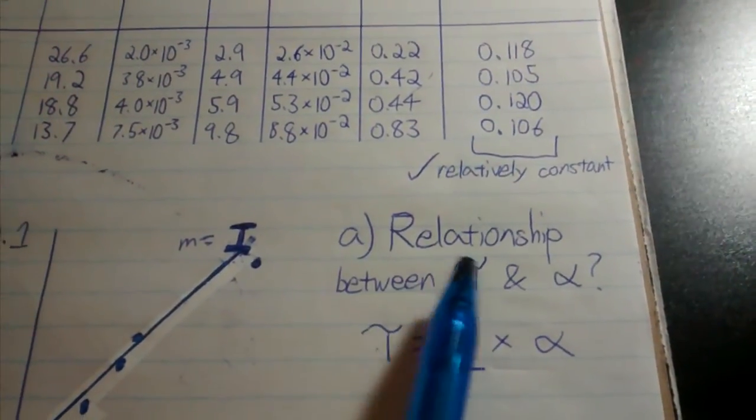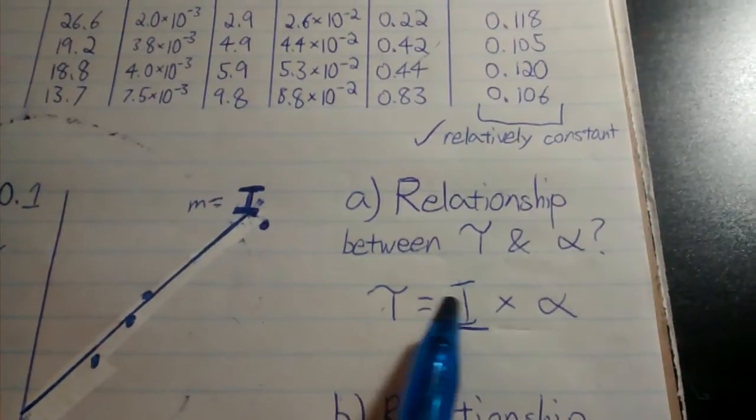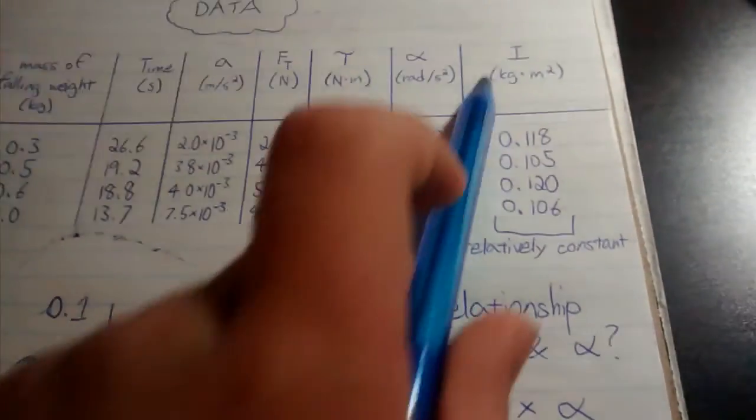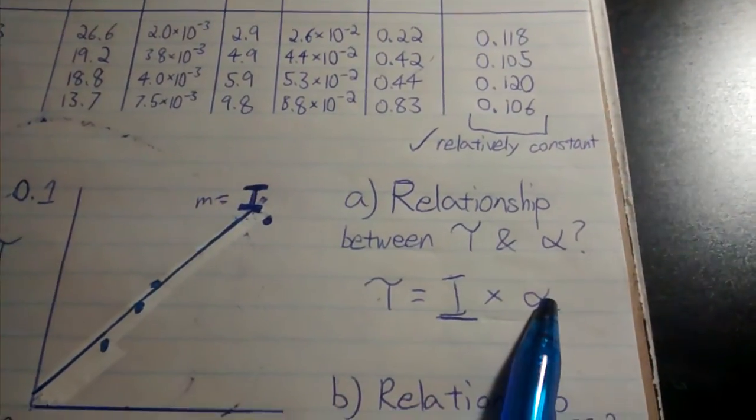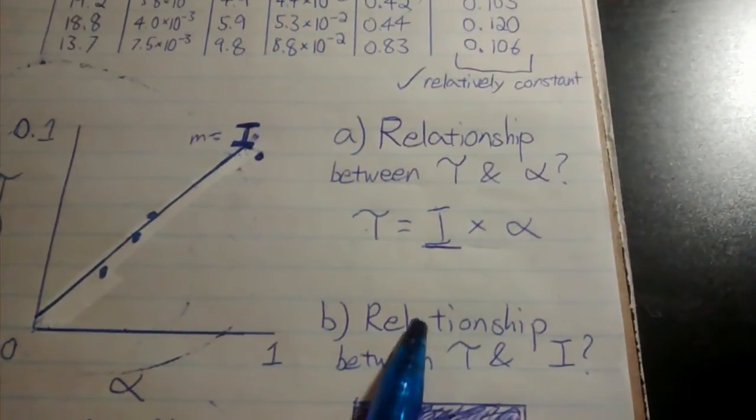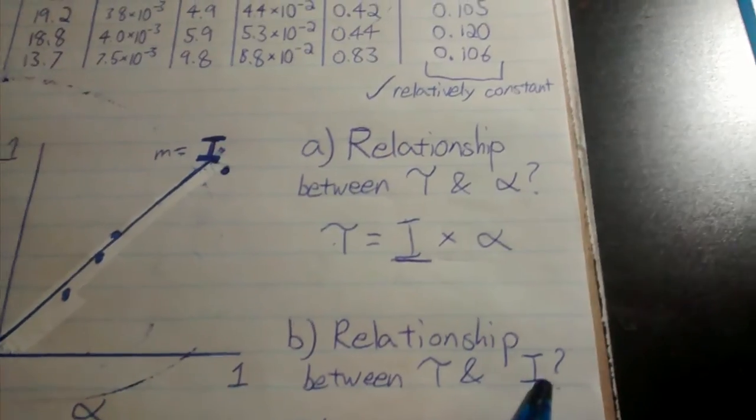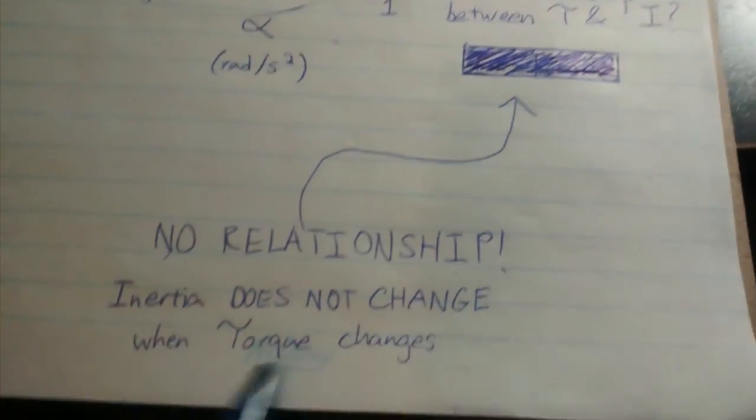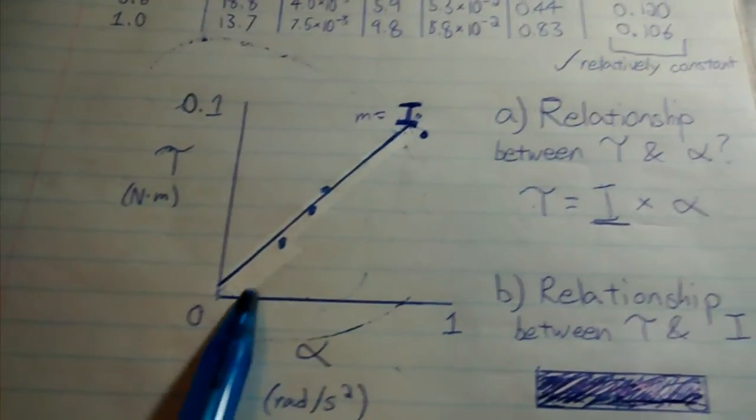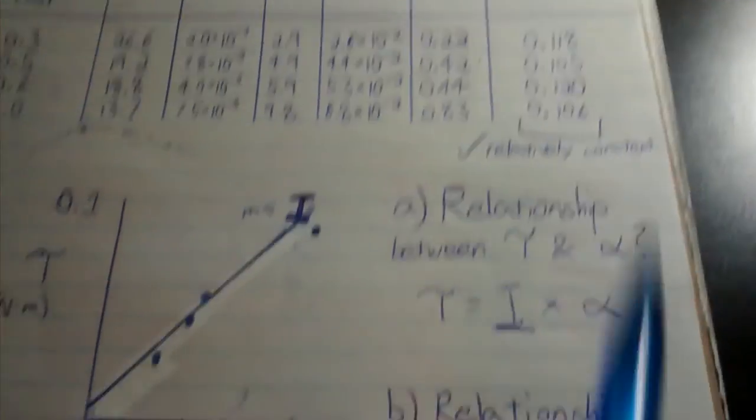Torque equals a certain number I (in units of kilograms times meters squared) times angular acceleration. What is the relationship between torque and the rotational inertia of the system? There is no relationship. The rotational inertia of the system does not change when torque changes, as shown here, because I is relatively constant. Thank you.